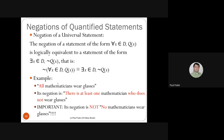Negation can be applied to any logical formula, including quantified ones. The negation of a universal statement 'for all X in domain D, Q(X)' is logically equivalent to 'there exists X in D such that not Q(X) is true.' The negation of a universal statement is the existential statement of the negation of the inner formula.